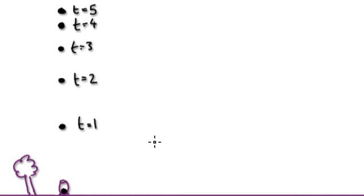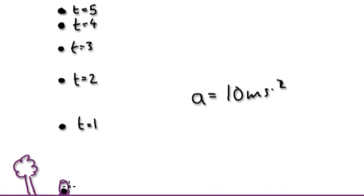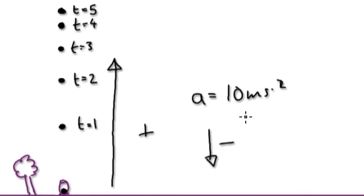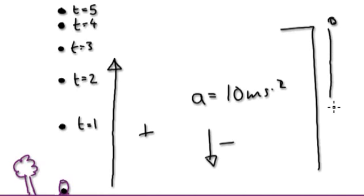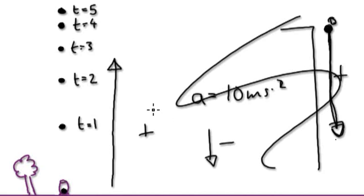When we say the acceleration is 10 meters per second squared, it means every second the speed decreases by 10. The reason it's decreasing is because we are taking upwards as positive. Anything downwards we're going to take as negative. Direction is important in this scenario.